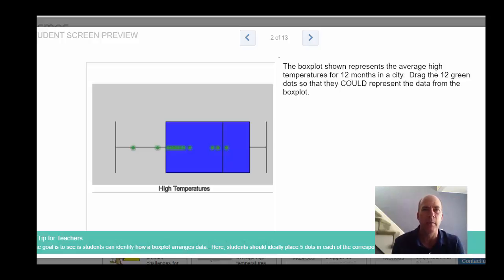So let me show you a few examples to see what we're talking about here. In this one I've given students a box and whisker plot with 12 movable points, and students are challenged to drag the points to positions that could be points in the dot plot. And I have 12 points here, and notice I can only move them side to side, not up and down, just side to side.